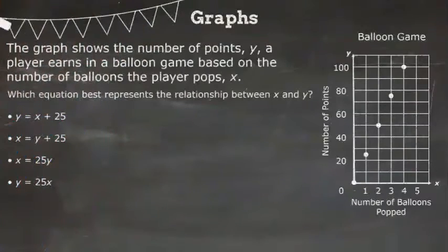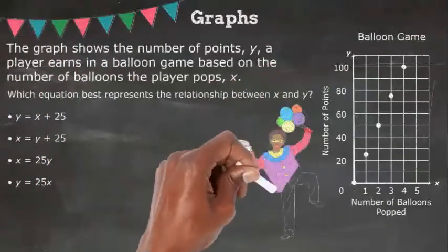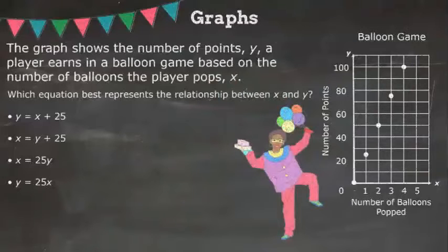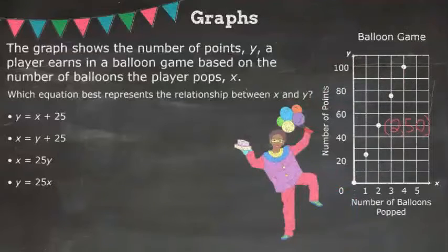Next, let's look at a graph problem. The graph shows the number of points y a player earns in a balloon game, based on the number of balloons the player pops, x. Which equation best represents the relationship between x and y?